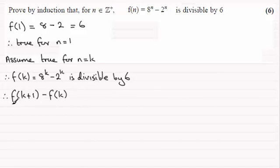But if we substitute f(k+1) in now, that's going to be 8 to the power k plus 1 minus 2 to the power k plus 1. So we've got 8 to the power k+1 minus 2 to the power k+1, and then we've got minus f(k). So that's going to be minus, and then I'll just put that in brackets, 8 to the power k minus 2 to the power k.